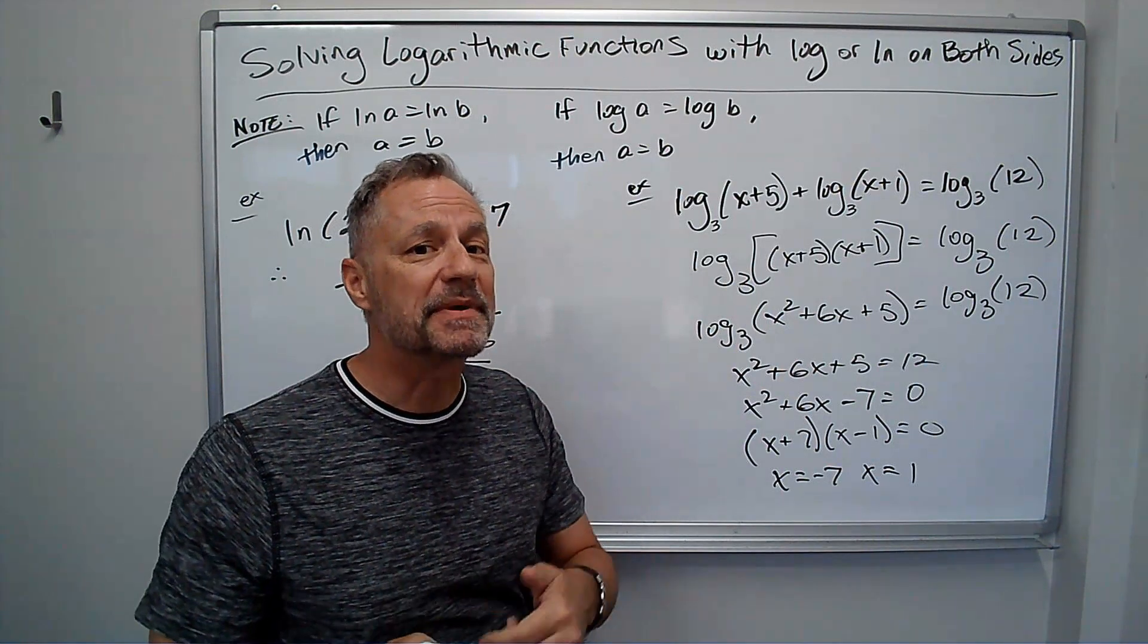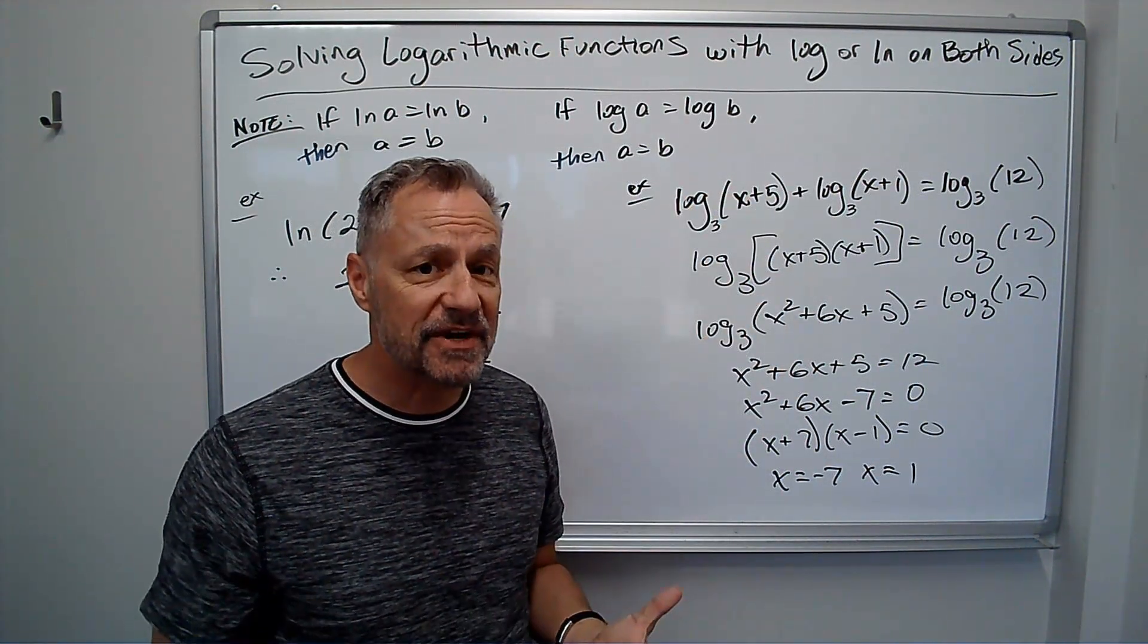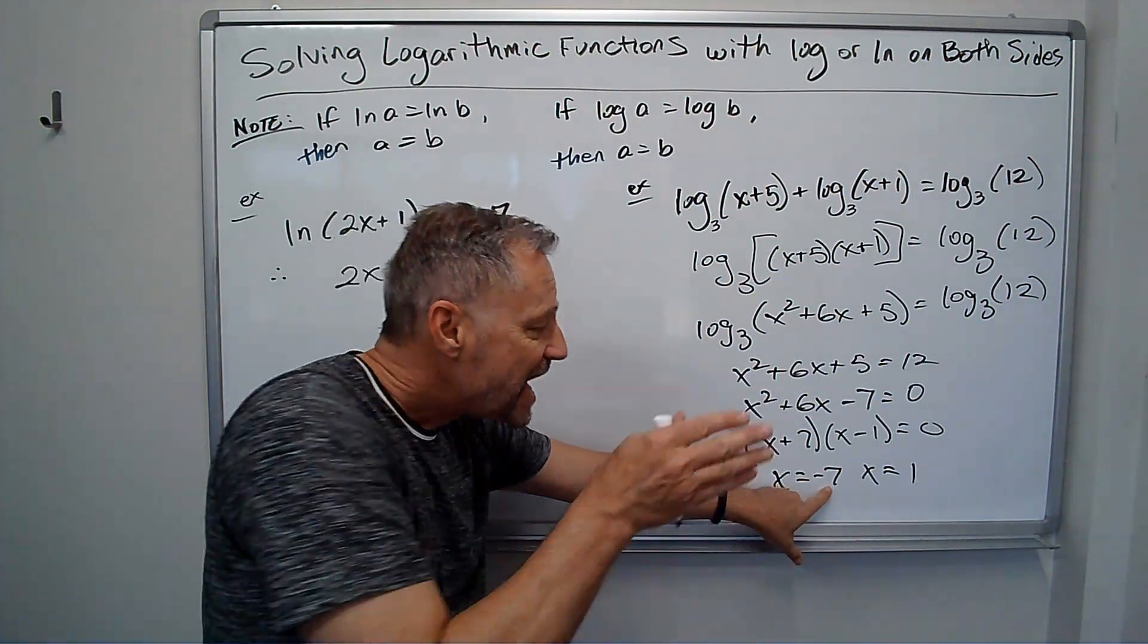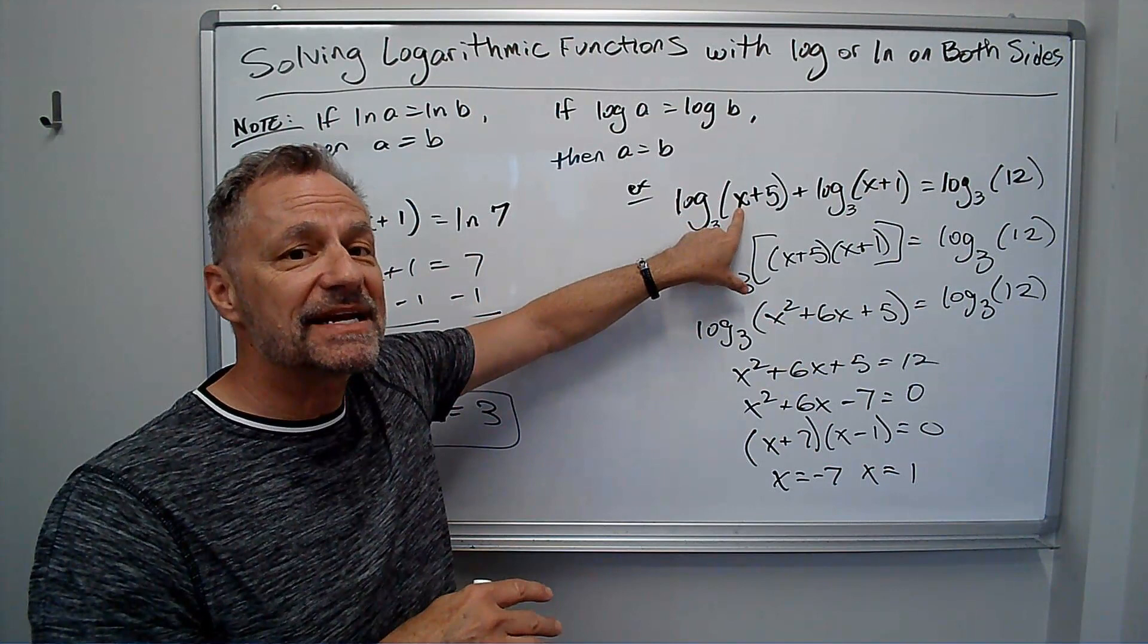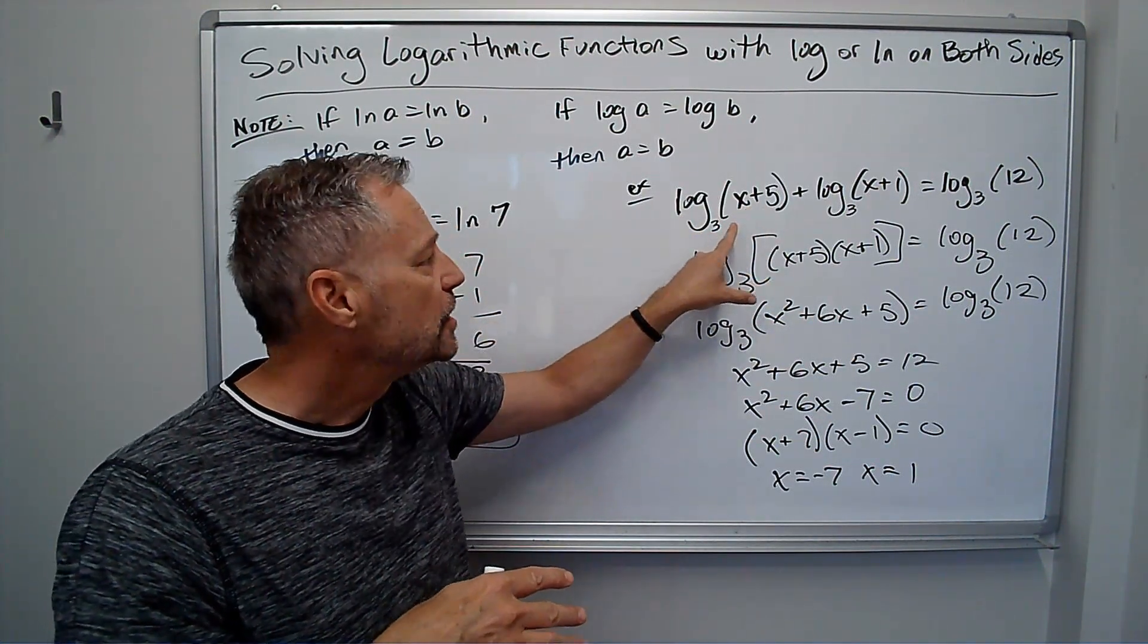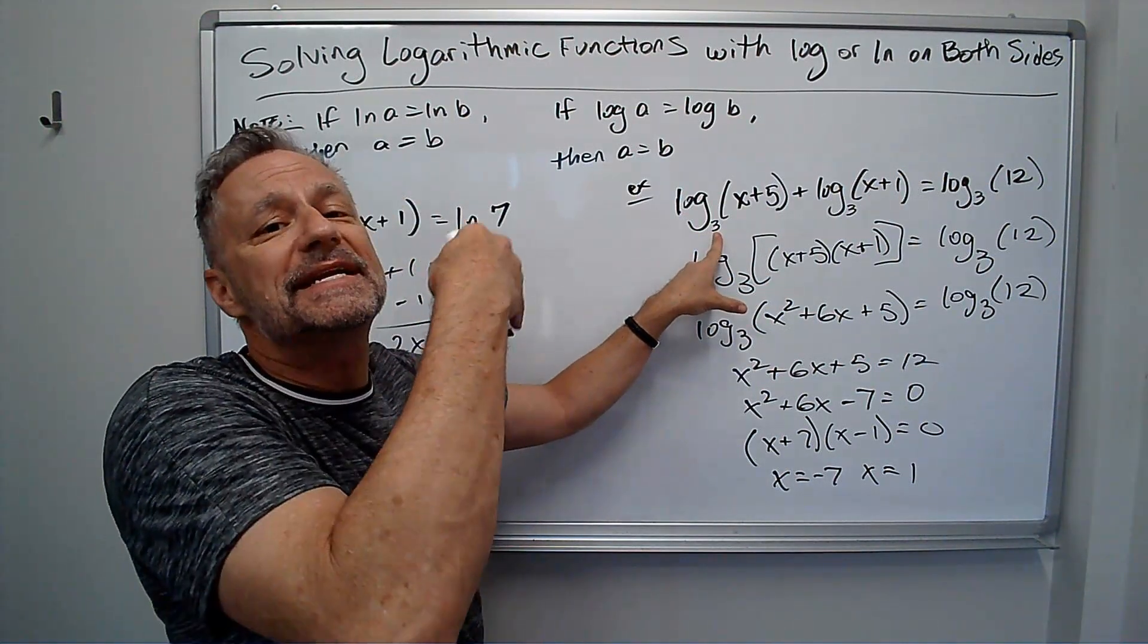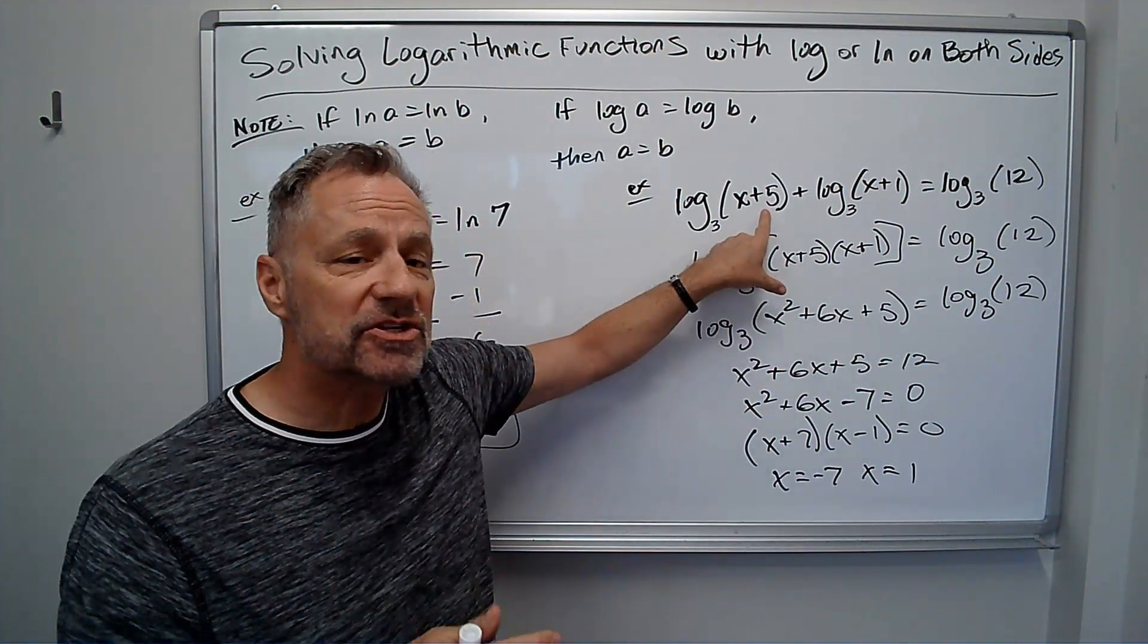But I have to be careful because remember the domain of the log function is all positive numbers. So negative 7, I don't throw it out just because it's negative. But if I plug it in here, negative 7 plus 5 is negative 2. I can't take the log of negative 2. There's no power 3 to some power has to equal negative 2. It can't. It doesn't work here, so I throw it out.